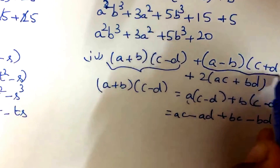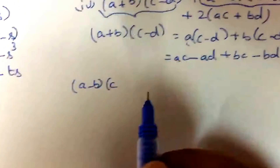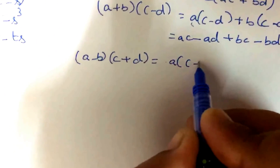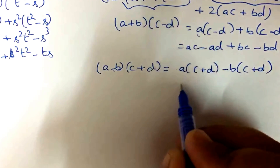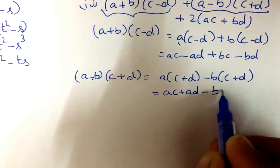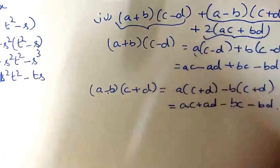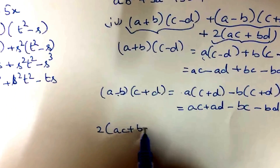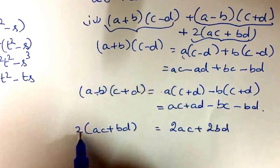Taking the second expression (a - b)(c + d): a into (c + d) minus b into (c + d), giving ac + ad - bc - bd. The third expression is 2(ac + bd), which equals 2ac + 2bd.